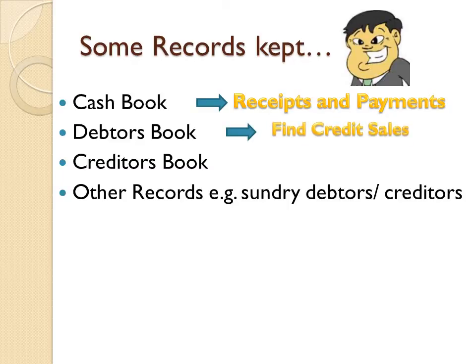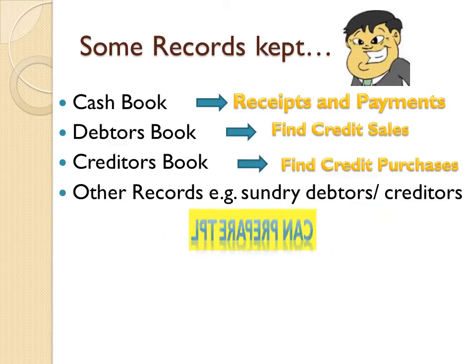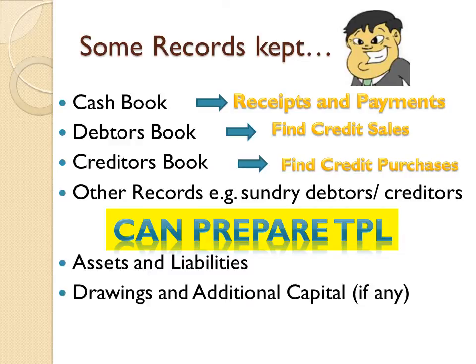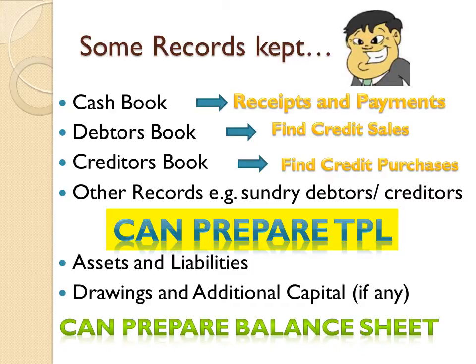From the debtors book you can find credit sales, and from the creditors book you can find credit purchases. With this information we can prepare a trading profit and loss account. With additional information on assets, liabilities, drawings, and additional capital, you can also prepare the balance sheet or statement of affairs.